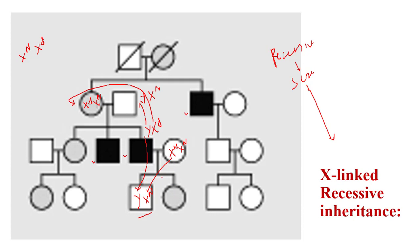Regarding the daughter: she must have inherited a defective X from her father, and another normal X from her mother, so she is a carrier. Since the affected man has only one X chromosome and it is defective, all of his daughters will be carriers because he transmits only the defective X chromosome to all of his daughters. This is another rule: the affected person cannot transmit the disease to their sons, but all daughters of the affected person will be carriers.